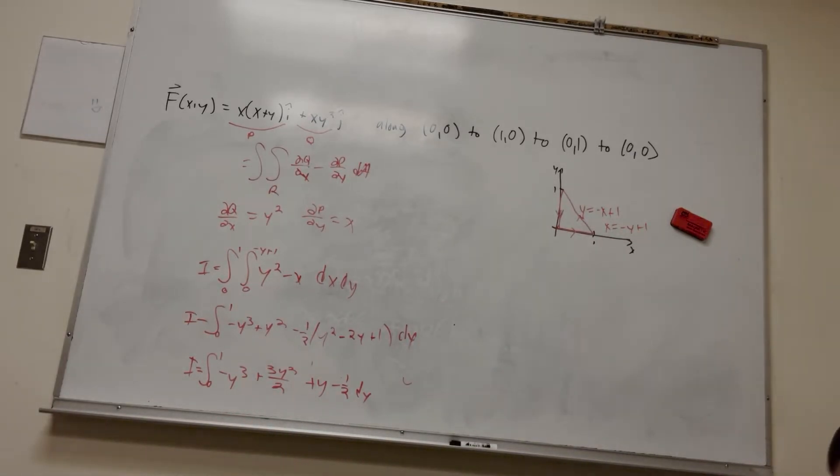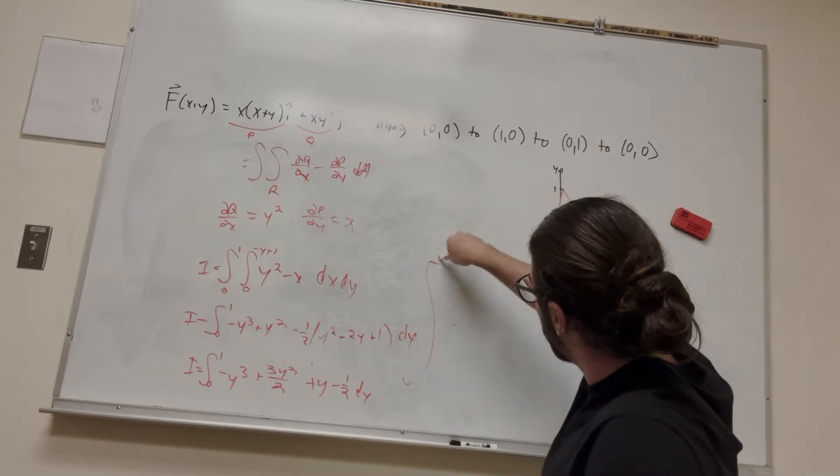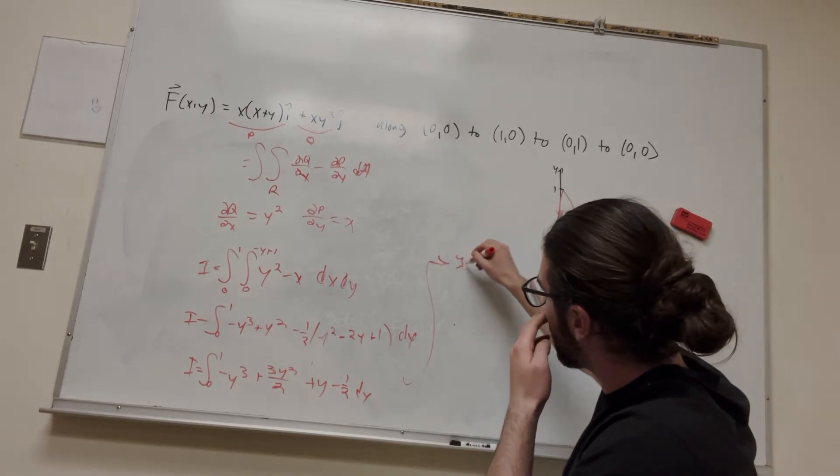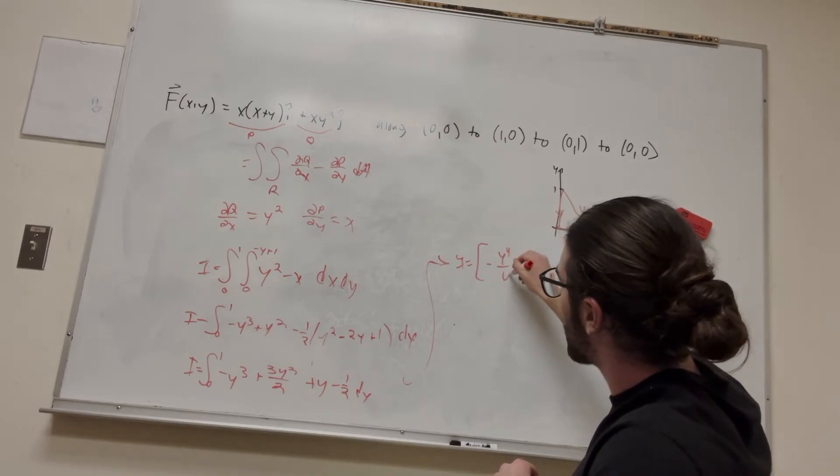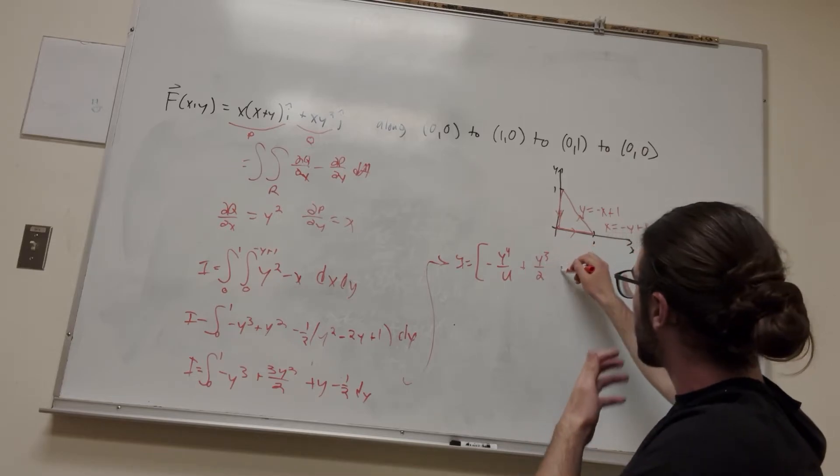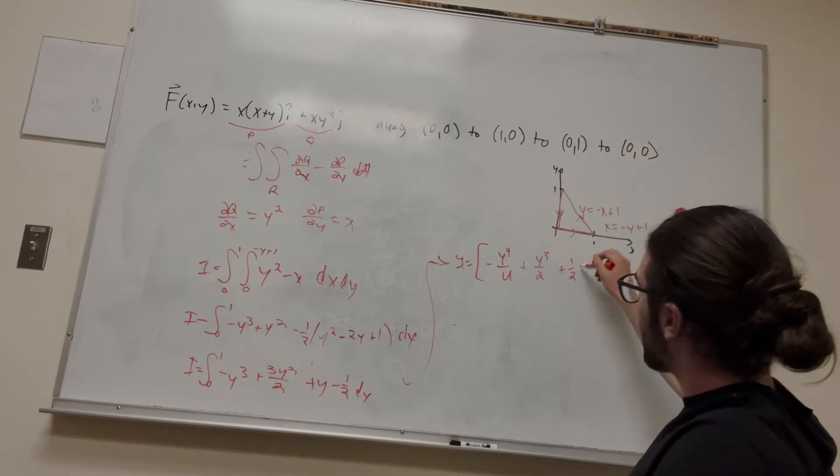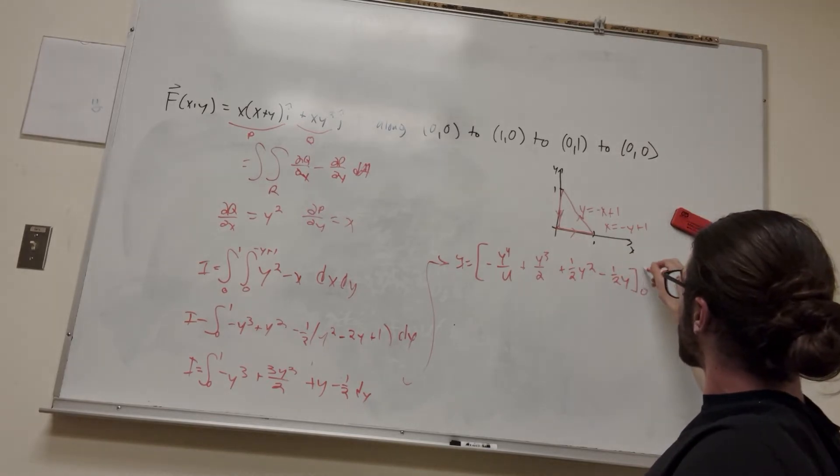I almost got that all over my pants. That was unfortunate, but it's all good. Alright, so let's bring it up. Integral is equal to negative y to the fourth over 4 plus y to the third over 2 plus 1 half y squared minus 1 half y from 0 to 1, of course. This is not that hard to solve.